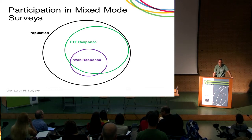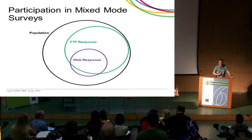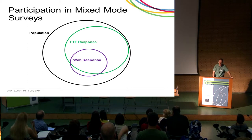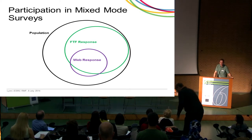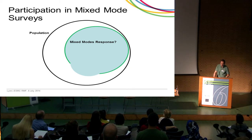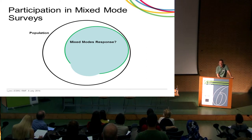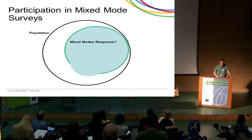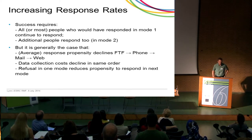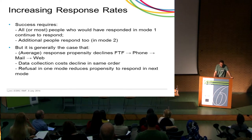If we think about the population we're trying to study: in a face-to-face survey a large proportion respond. In a single-mode web survey, fewer people respond — but many of them are the same people who would have responded face-to-face. The overlap is substantial, with a small portion who would respond to web but not face-to-face. One motivation for mixing modes is to achieve combined coverage — all those who would respond face-to-face, plus the additional people who would only respond to web — thereby increasing our overall participation rate.